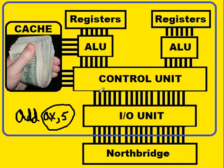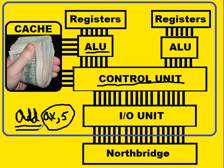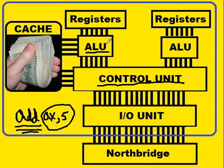The control unit now tells the ALU what to do with these two operands. It says add those two — add 5 into the AX register, which is a register up here. So the control unit tells the ALU what to do with the operands that it now has.